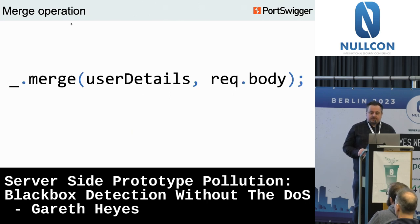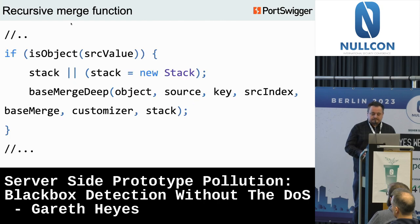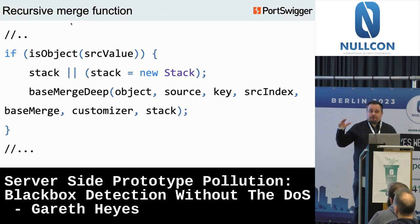Another component is the recursive merge function — for example, Lodash's merge. It merges objects, and the request body is under the attacker's control. The recursive merge function enumerates the properties of the source objects and assigns them to the target. If the keys are not sanitized, the __proto__ property gets enumerated and, when the assignment happens, it gets turned into a special getter/setter property like __proto__, which then assigns on the object prototype. That's why prototype pollution happens.